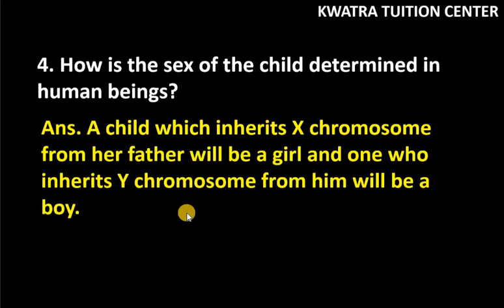So basically, what happens is that father has XY chromosomes, mother has XX chromosomes. So if we separate it out, father has XY, mother has XX.